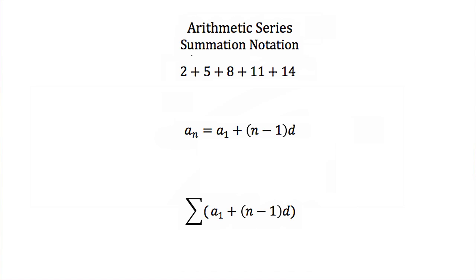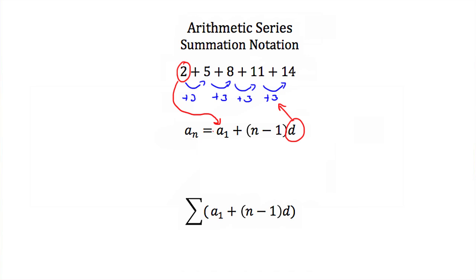Let's try using summation notation to create the notation for this example series: 2, 5, 8, 11, and 14. The first step is to write the explicit formula for this sequence. To go from 2 to 5 is an increase of 3; from 5 to 8 is an increase of 3; from 8 to 11 is another increase of 3; and from 11 to 14 is again an increase of 3. That means our common difference is 3, our first term a1 is 2, and our explicit formula is: an = 2 + (n − 1) × 3.